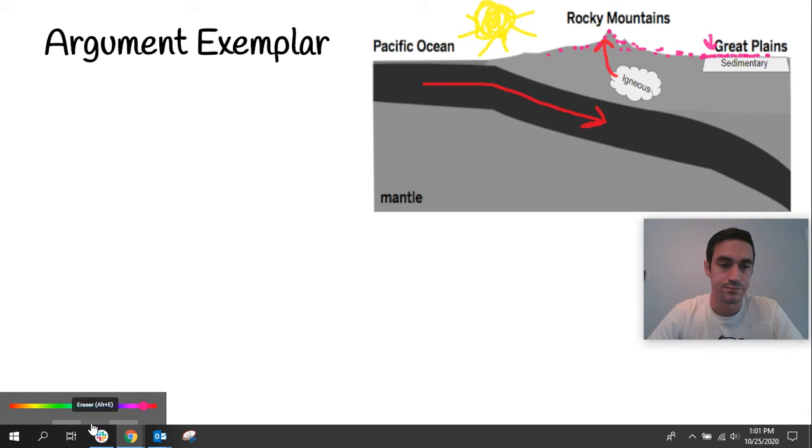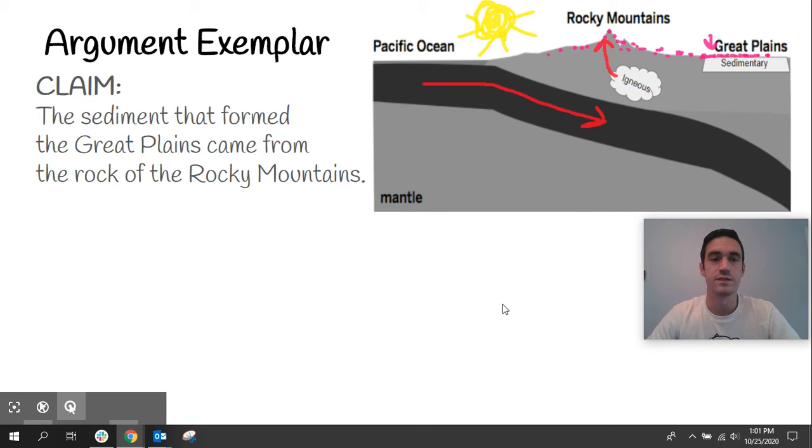Now, what our writing should look like is our claim should have said the sediment that formed the Great Plains came from the rock of the Rocky Mountains. This was claim one in your Google form. However, we talked about in our exemplar written argument and what to do and what not to do. You should have never actually said claim one. If you only said claim one, you did not get credit for your claim. You have to write in complete sentences.